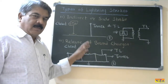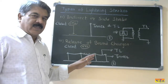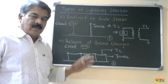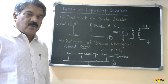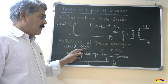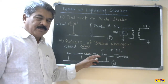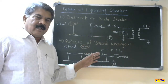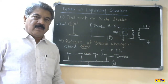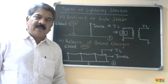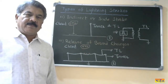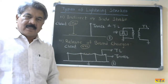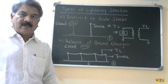So these are the three basic classifications of lightning discharge: direct stroke, indirect stroke, and release of bound charges. Lightning discharges are also classified in another way — depending on the current magnitude and the time for which the discharge is present. I will explain that now.